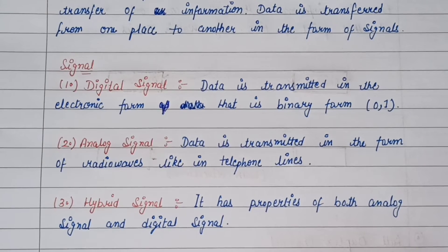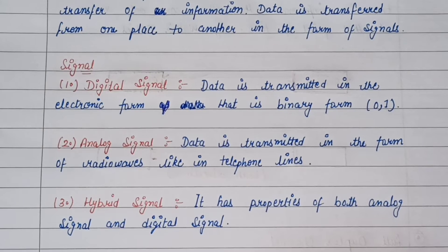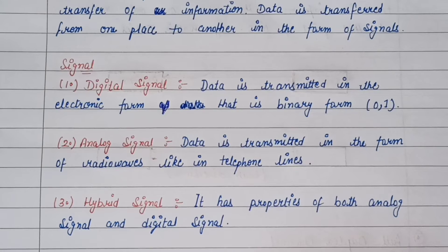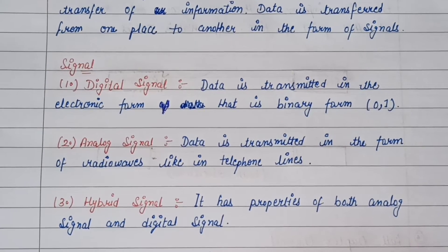The data is transmitted in the form of radio waves, like in telephone lines. Last is hybrid signal. It has properties of both analog signal and digital signal. Hybrid signal mein, digital signal aur analog signal dono ki properties hain.